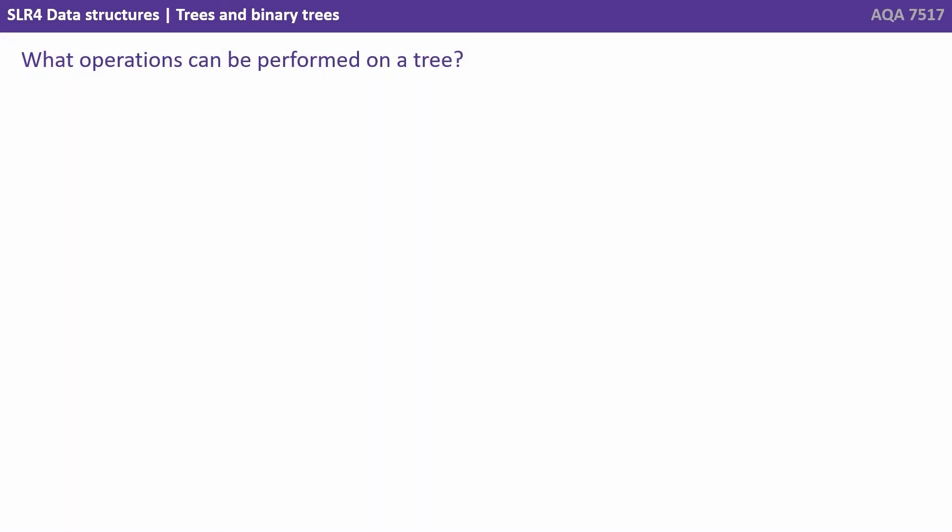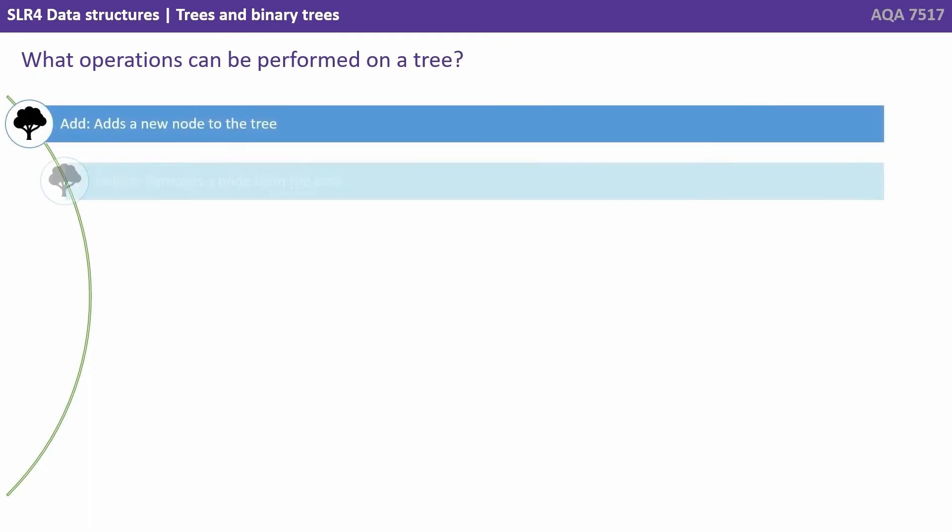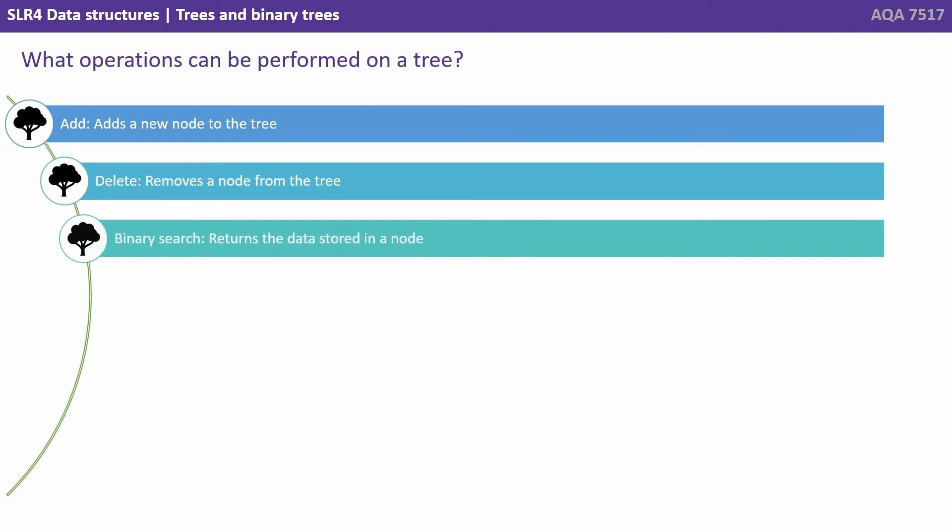So what operations can be performed on a tree? We've got add adds new node to the tree. Delete removes a node from a tree. Binary search returns the data stored in a node.